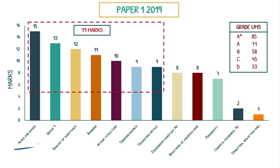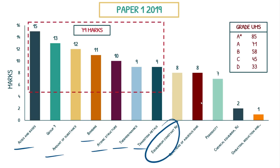Paper one 2019. Acids and bases again, amount of substance, bonding, atomic structure, thermodynamics — these are popping up time and time again. Transition metals comes up all the time, and equilibrium constant Kp — this is one I would one hundred percent suggest you learn because it comes up on every single paper. Not all topics have a high frequency every year, but Kp has come up every single year, so this is one in particular I suggest learning completely.